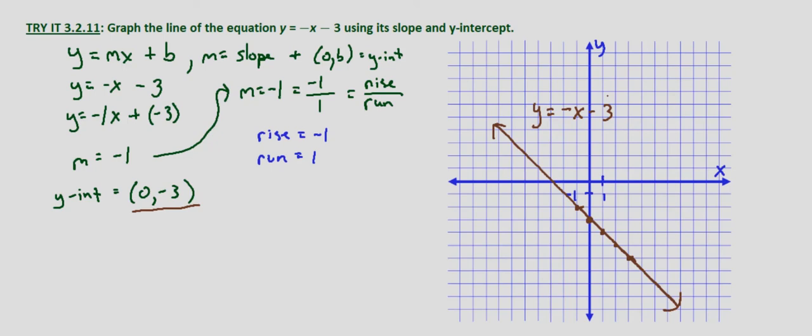We now have the graph of y equals negative x minus 3 using the slope and y-intercept. And if you think back to our first examples where we are plotting a line given a point and the slope, this is essentially the same thing. The difference is that we have to find our y-intercept, our first point and our slope. But then the process is essentially the same as if we were given any point and the slope itself.